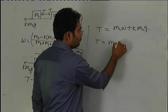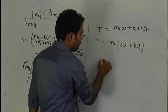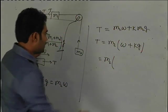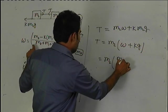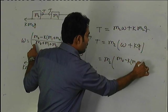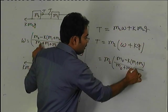Tension value M2 into W plus KM2G. This will be T equal to M2(W plus KG). Acceleration will be taken as T equal to M2 times M0 minus K(M1 plus M2) by M0 plus M1 plus M2.